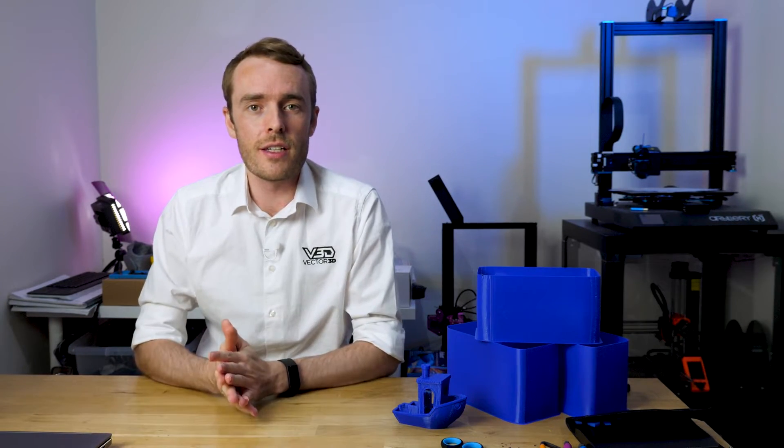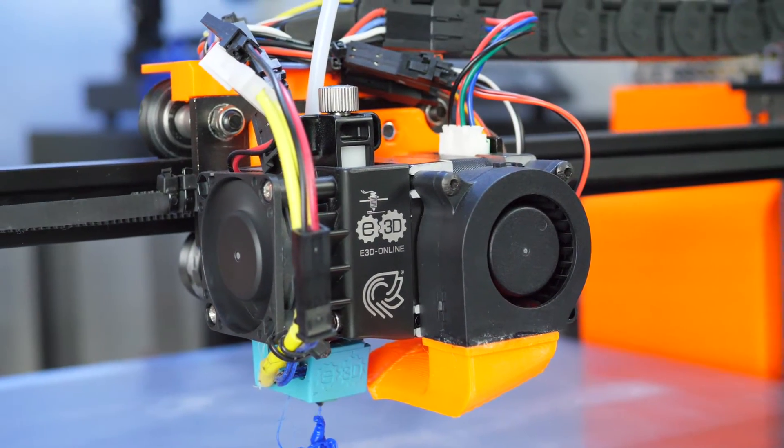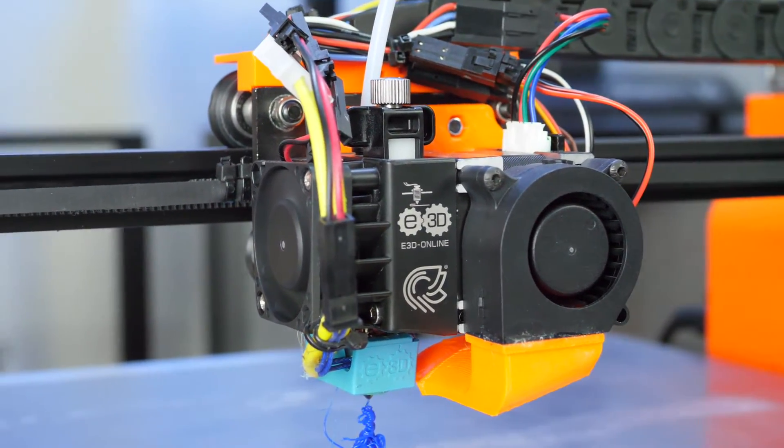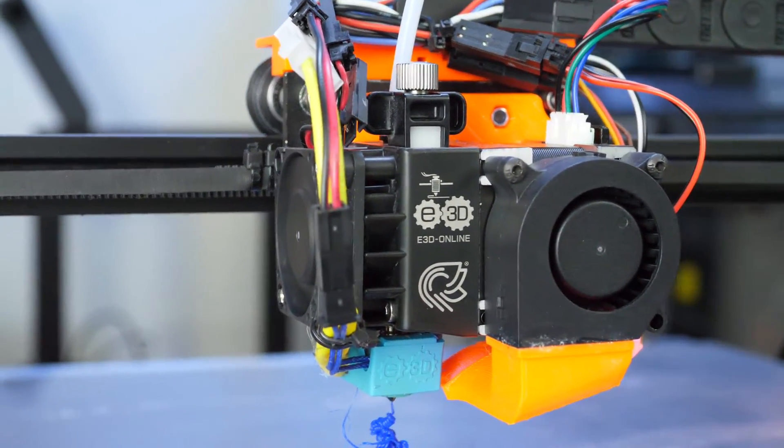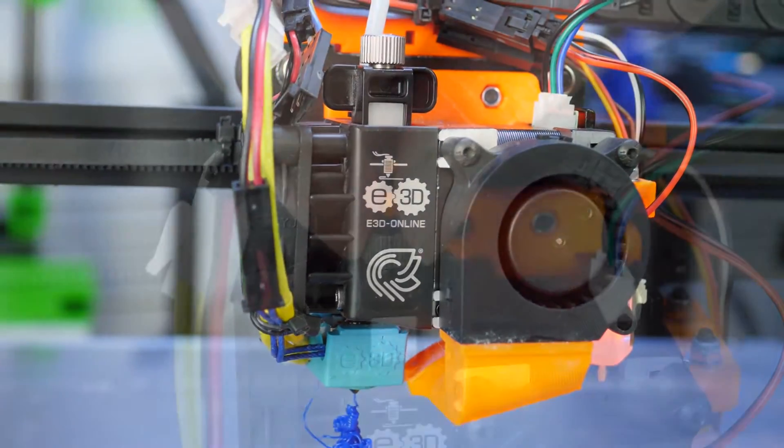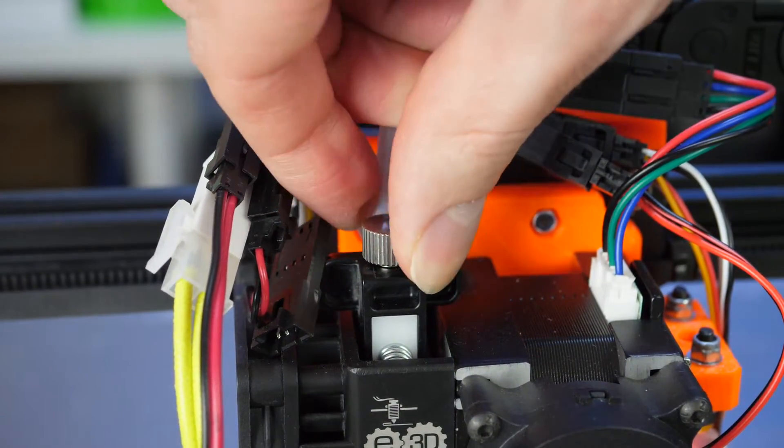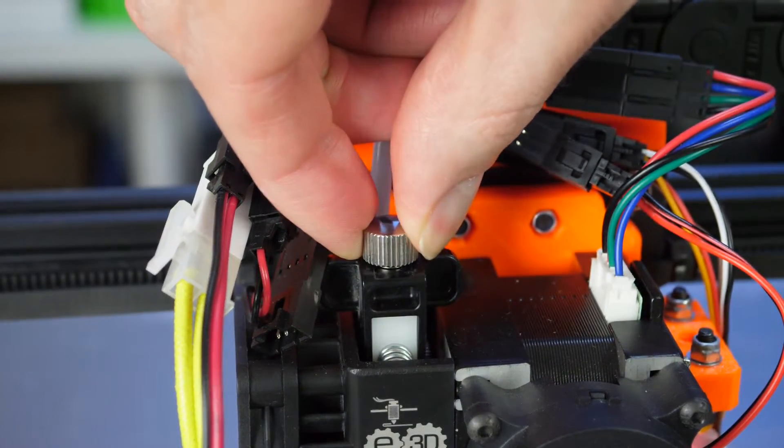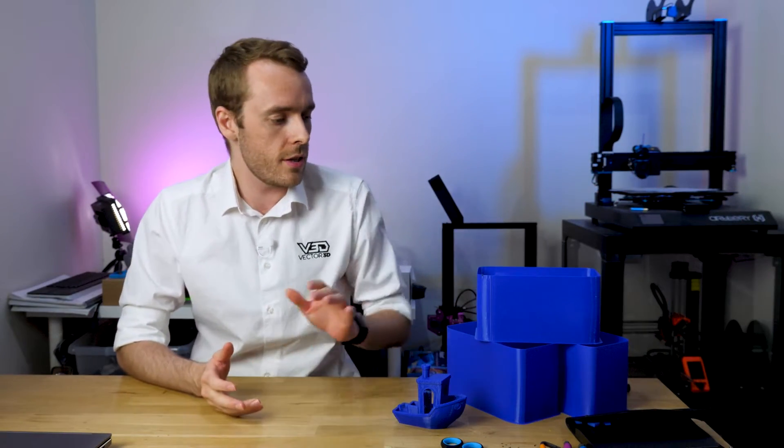The setup we're going to use for today's testing is the E3D Hemera with a 0.4 millimeter nozzle and a 30 watt heater. This is the standard Hemera. The tension is going to be set to the maximum minus one turn. The material we're going to be using is this royal blue PLA from Ousnest.